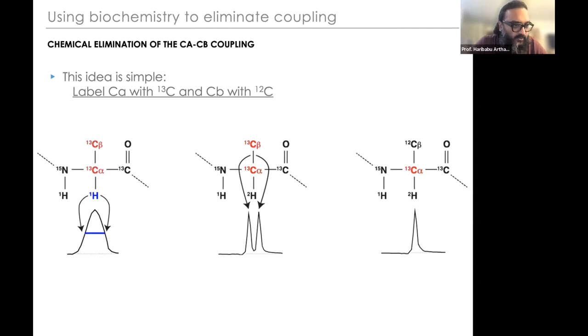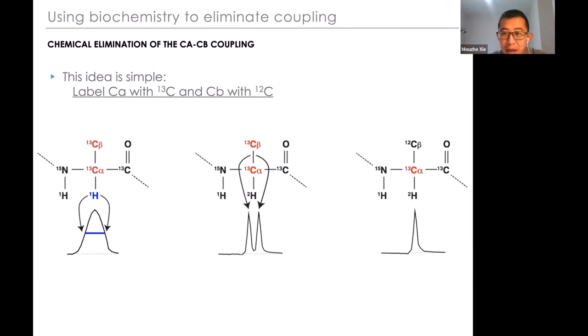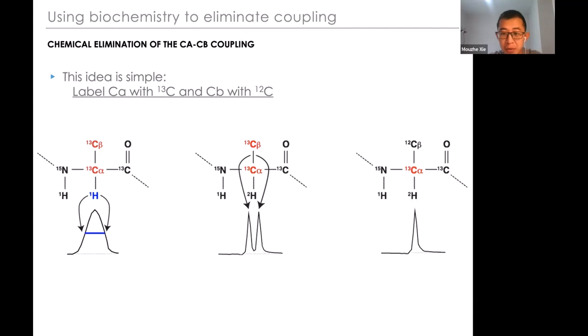At this point, two good questions from the audience: first, can you explain why the protonated C-alpha relaxes fast compared to other combinations? And second, is there a breakpoint between the gain in relaxation improvement and the loss of signal due to deuteration for C-alpha?